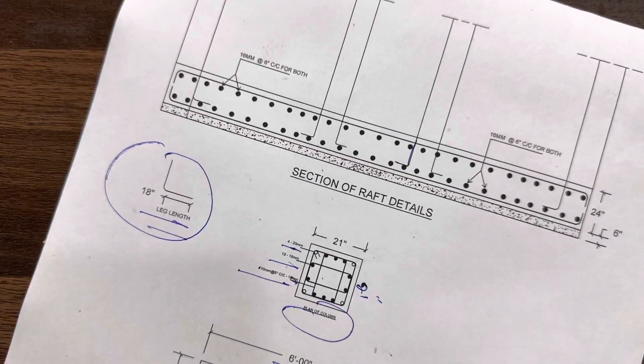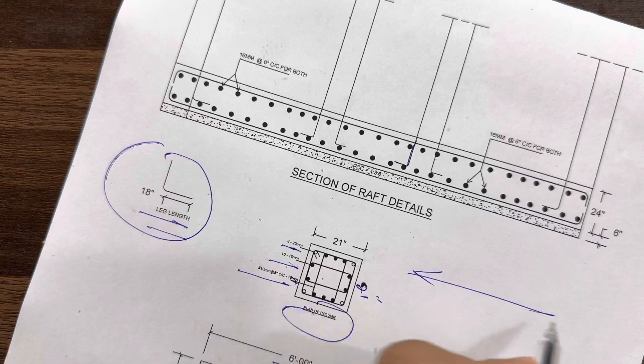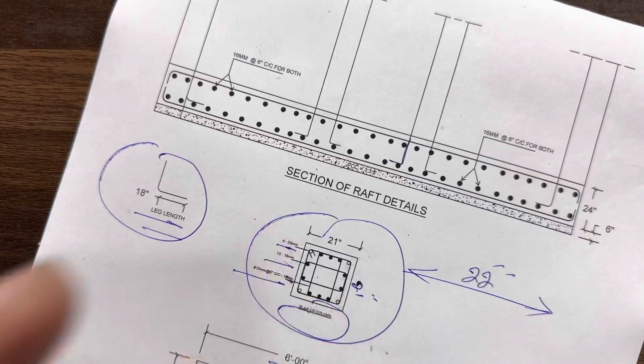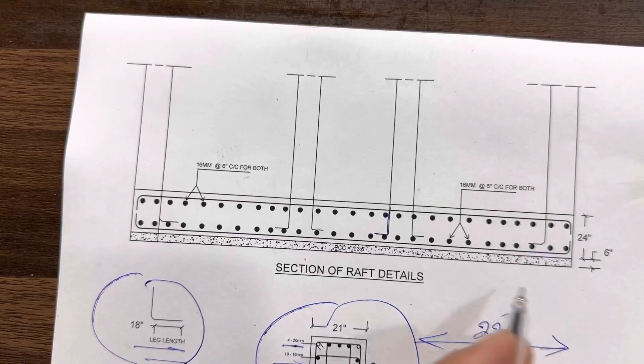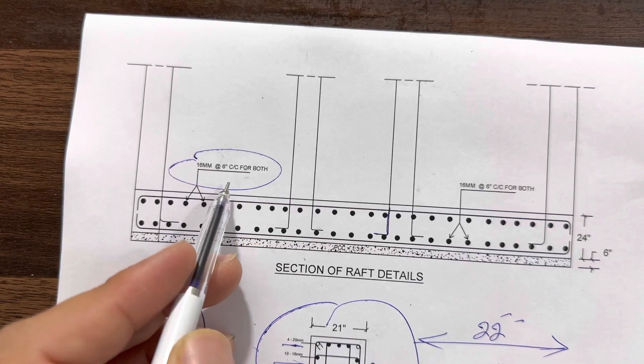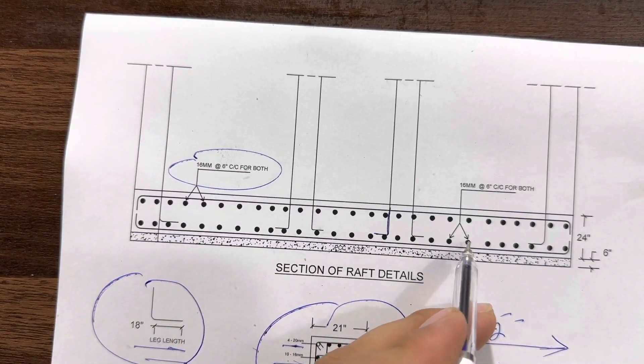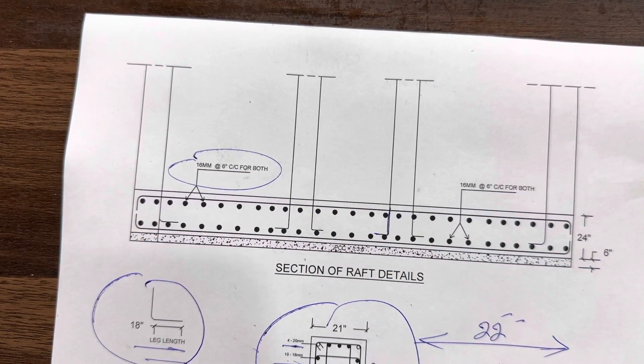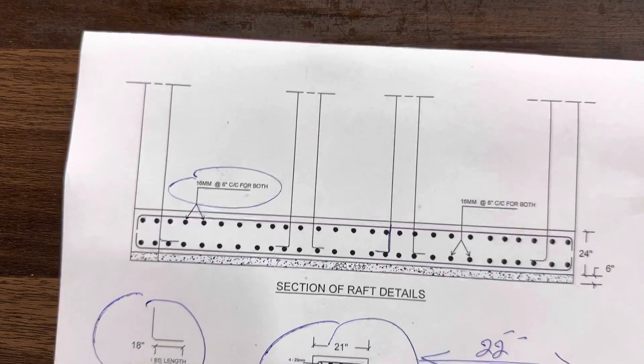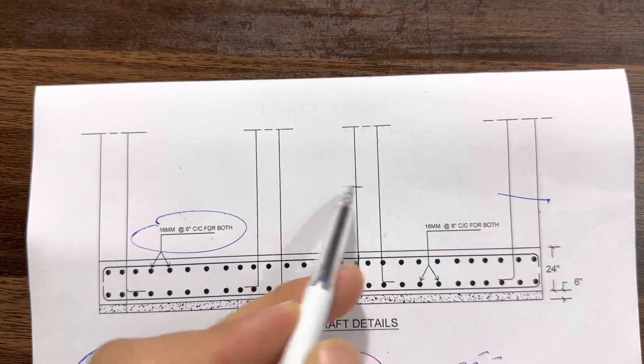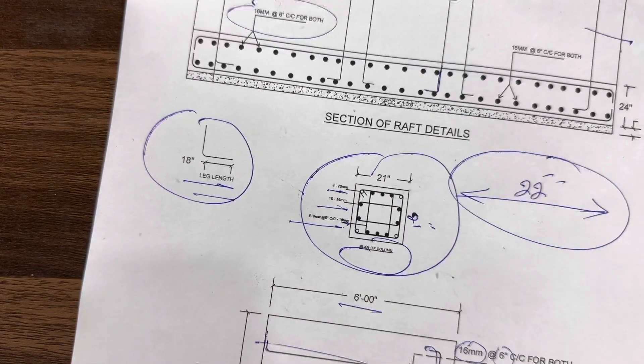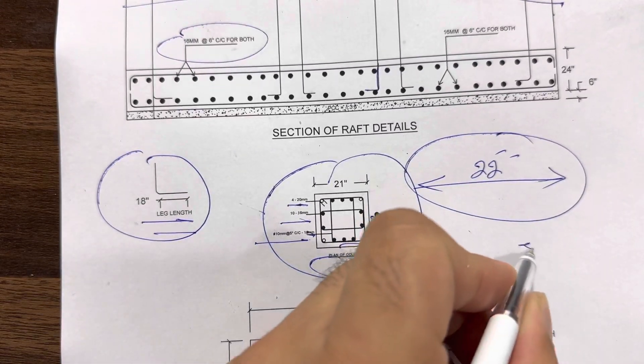One thing is very important: because the spacing I have is maximum up to 22 feet, I decided the size of column. You can see we have double mesh and we used 16 millimeter diameter of steel rod with spacing of 6 inches. For both bottom section and top section, we did the same diameter with spacing of 6 inches. These are the columns.